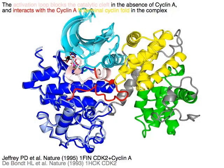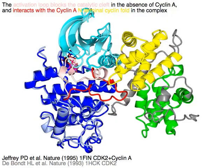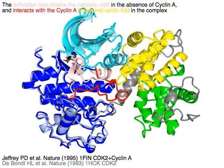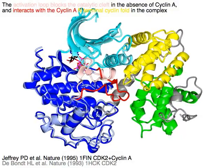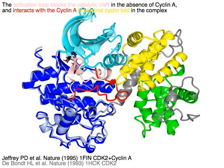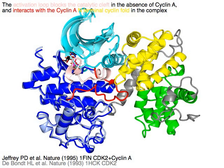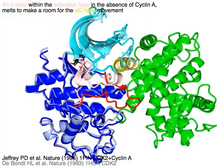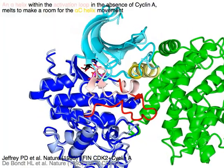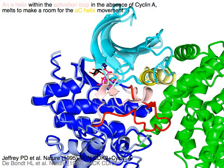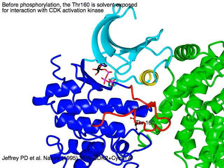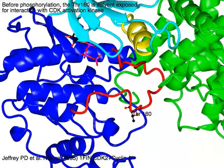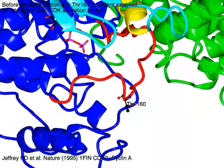In the absence of cyclin E, the activation loop in pink blocks the catalytic cleft. In the CDK2-cyclin A complex, the activation loop in red interacts with the N-terminal cyclin fold. An alpha helix within the activation loop in pink, in the absence of cyclin A, melts to make room for the alpha-C helix movement in yellow. Before phosphorylation, threonine 160 is solvent-exposed for interaction with CDK activation kinase.